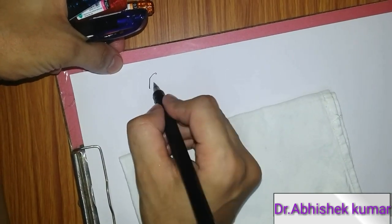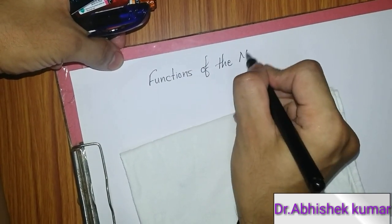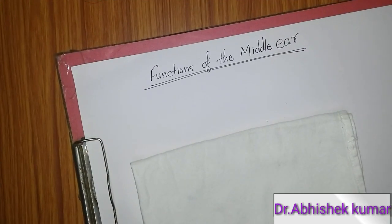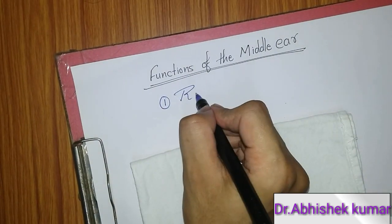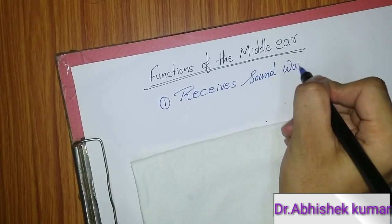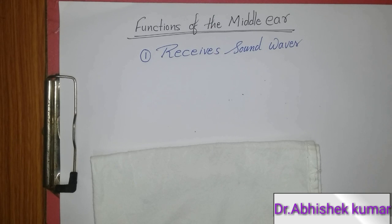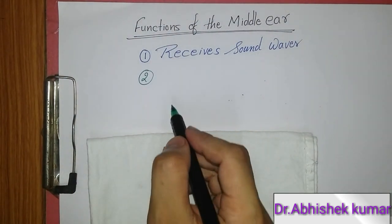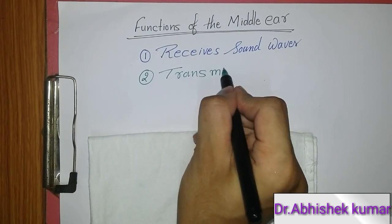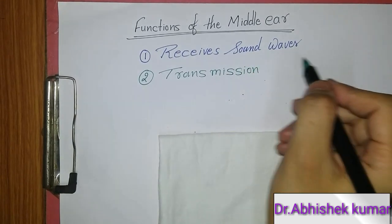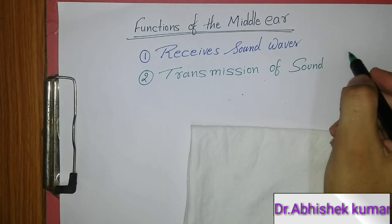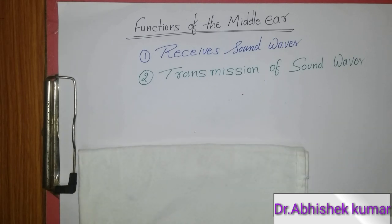Now we come to the functions of the middle ear. The first function is that it receives the sound wave from the external ear via the tympanic membrane. When sound comes to the ear it is received by the tympanic membrane. The second function of the middle ear is transmission of sound wave — the middle ear transmits sound waves to the inner ear through the tympanic membrane and the ossicular chain.